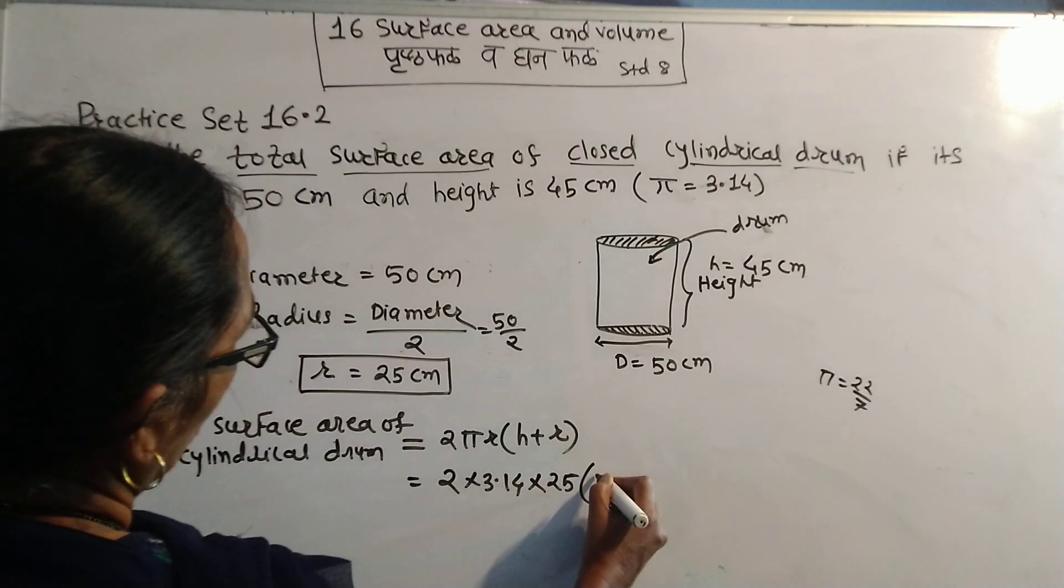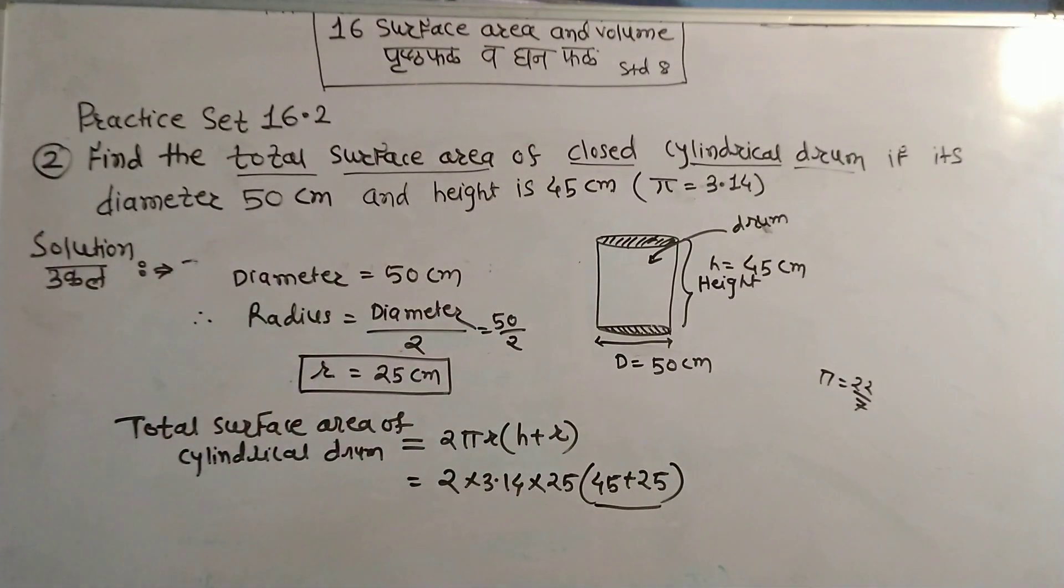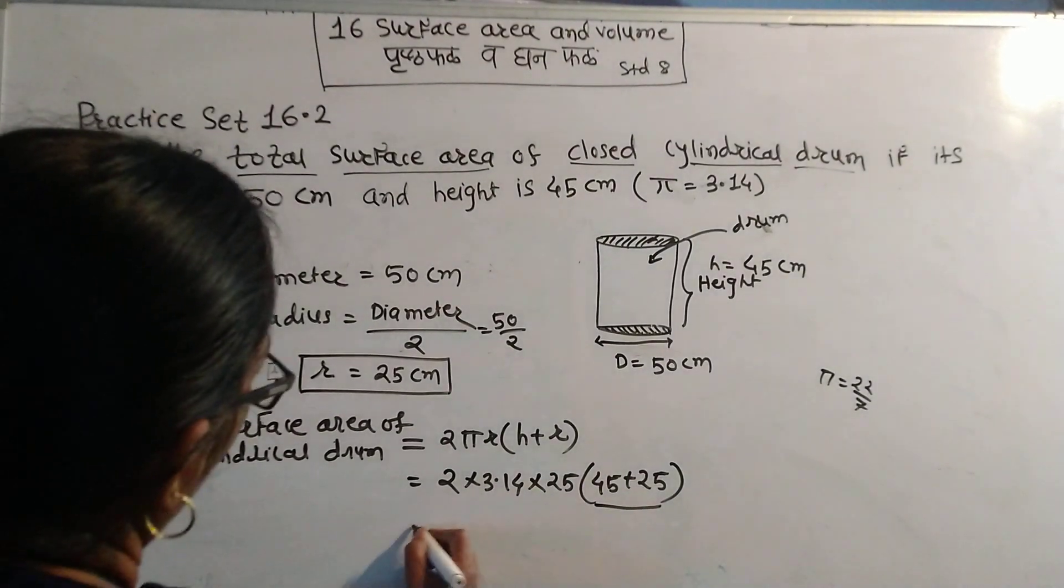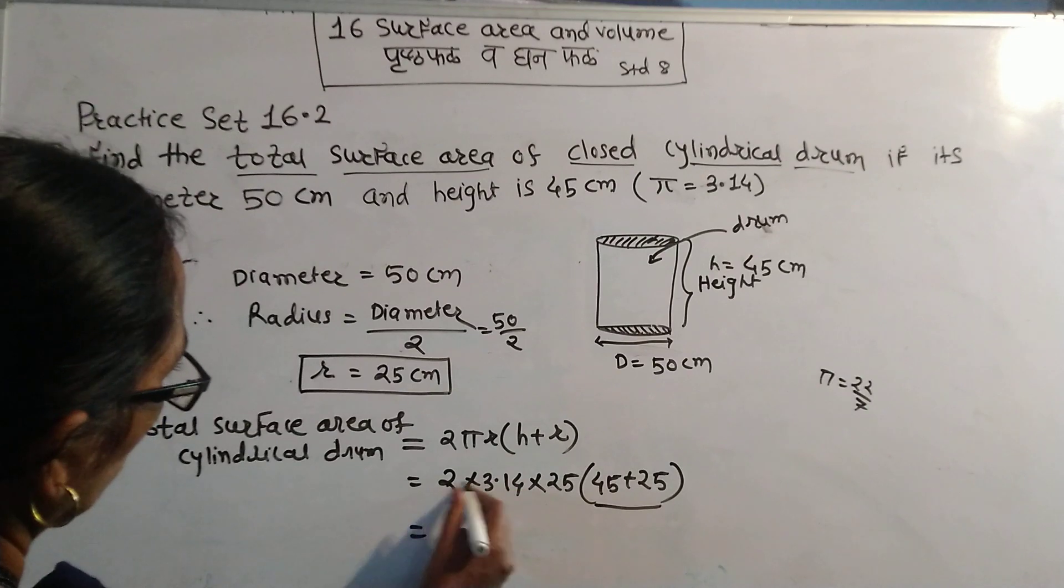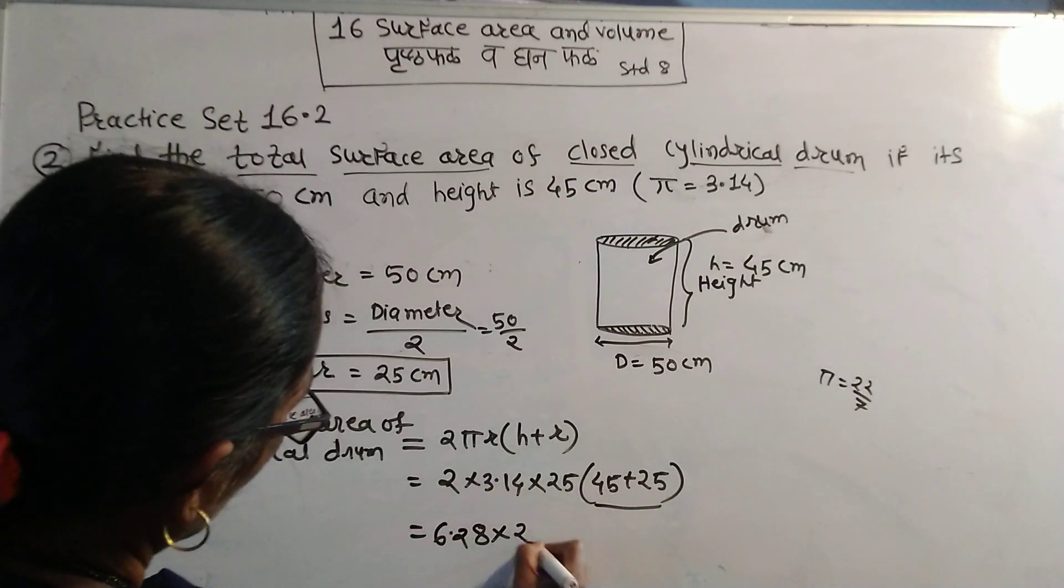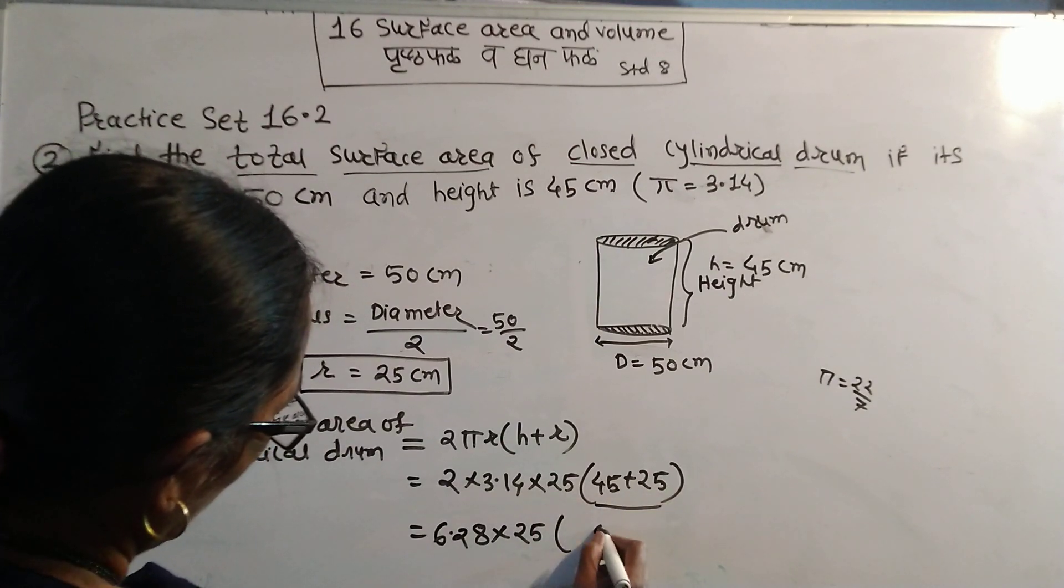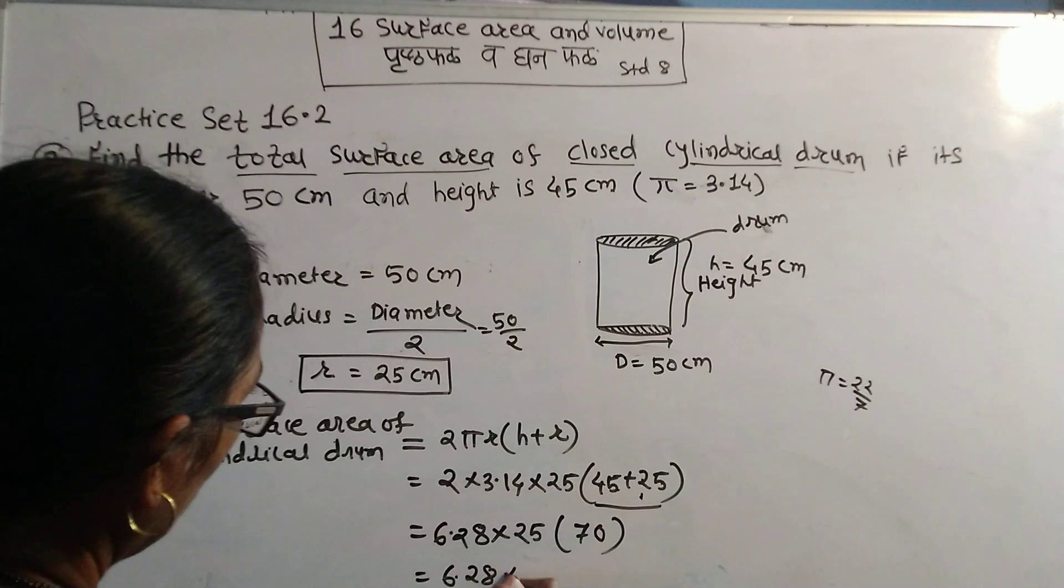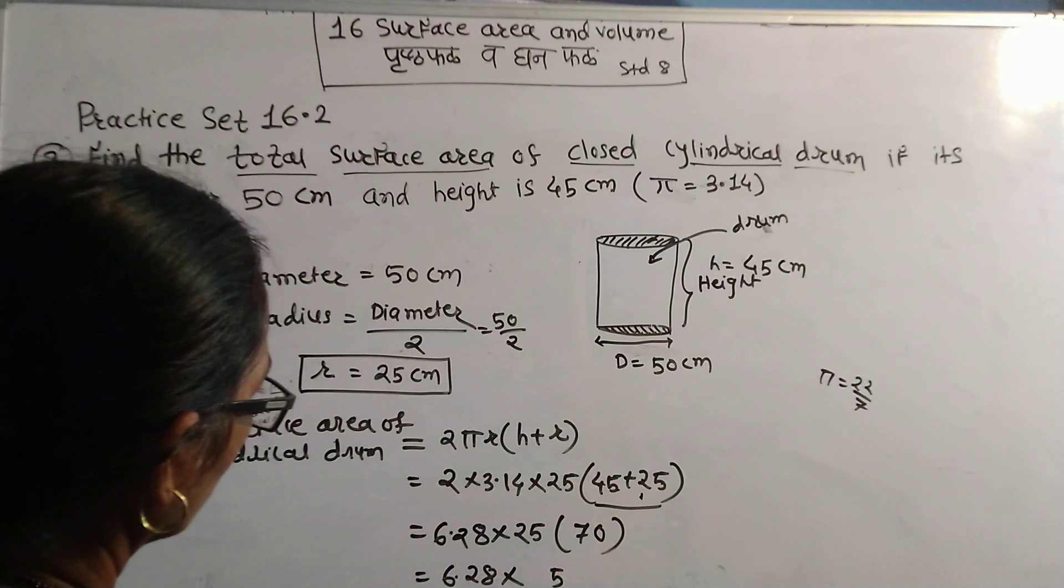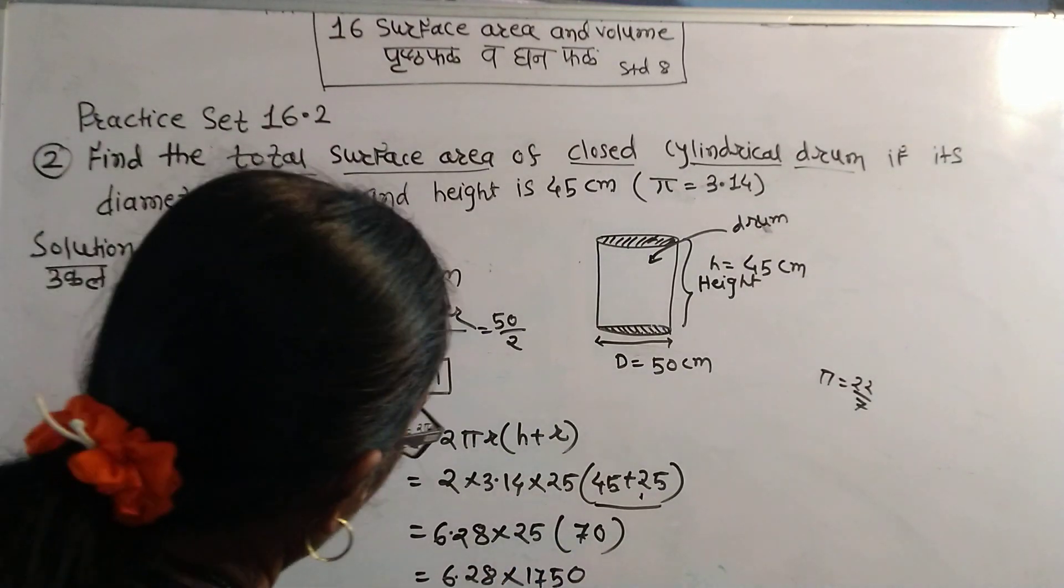In bracket height 45 plus 25. Now 2 into 3.14 into 25 in bracket, addition of this: 45 plus 25 equals 70.